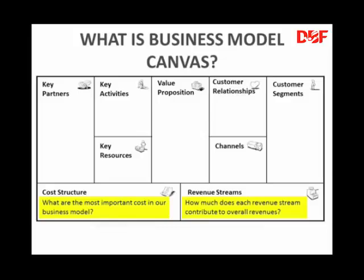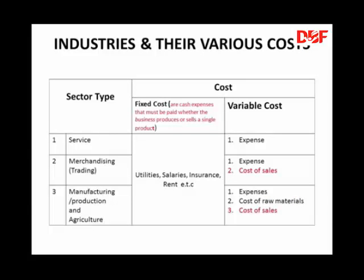But for now, let's look at our cost structure. A cost structure of a manufacturing company differs from the cost structure of a merchandising business and also a service business. You need to identify your business structure by first making a list of what you do in your business. For instance, do you buy and sell? Do you buy your material, process it into finished goods and then sell? You are in the manufacturing industry. Do you sell your expertise for money? Then you are in the service industry.